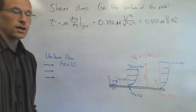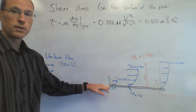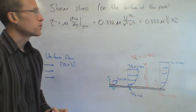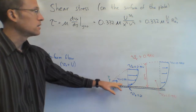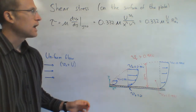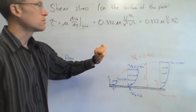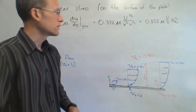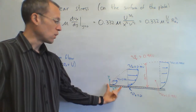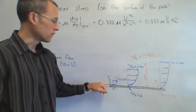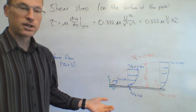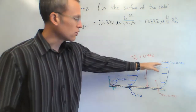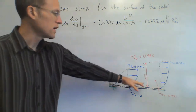Another important parameter is the shear stress acting on the surface of the plate. That was found to be 0.332 times dynamic viscosity times freestream velocity to the 3/2 power, divided by x to the 1/2 power times kinematic viscosity to the 1/2 power. A shorter way to write that is 0.332 times mu times U over x times the Reynolds number to the 1/2 power. The further down the plate I go, the less shear stress I have, because the velocity change is spread over a bigger y — so smaller shear stress as I go down the plate.